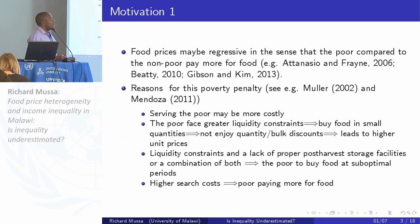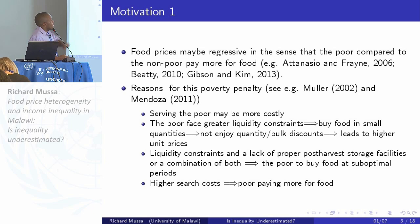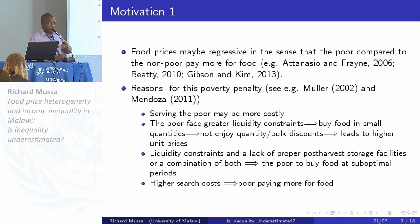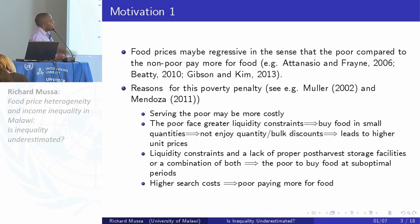There's a growing literature which shows that there are food price differences in terms of what the poor pay for the same items versus the rich. This literature basically talks about a poverty penalty that the poor face in the food market — studies show that the poor pay more for food. A good review can be found in Mendoza 2011 and Mueller 2002.